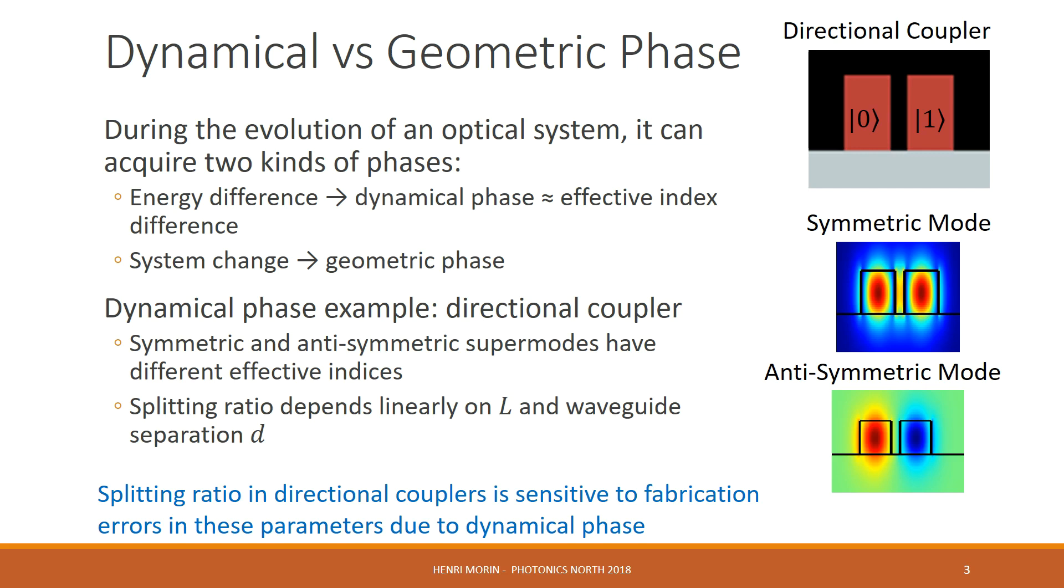In order to have a concrete example of this, we can look at the directional coupler. When we have two waveguides, as I have in the top right here, they have individual modes when they are far apart from each other. As we bring them closer and closer together, these modes combine in order to create the symmetric and anti-symmetric super modes.